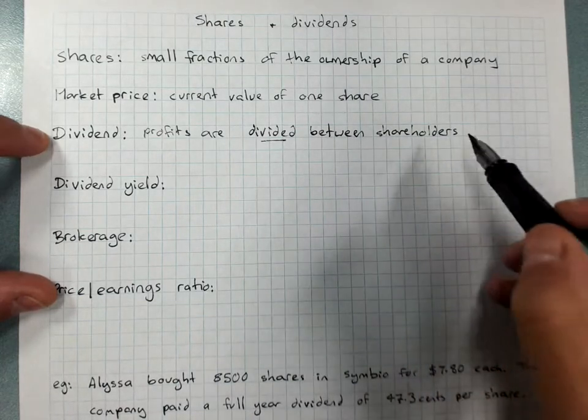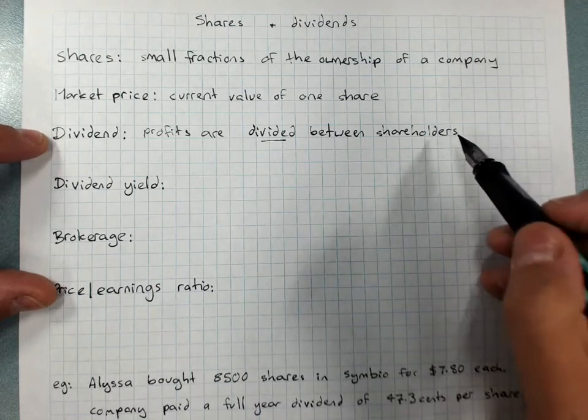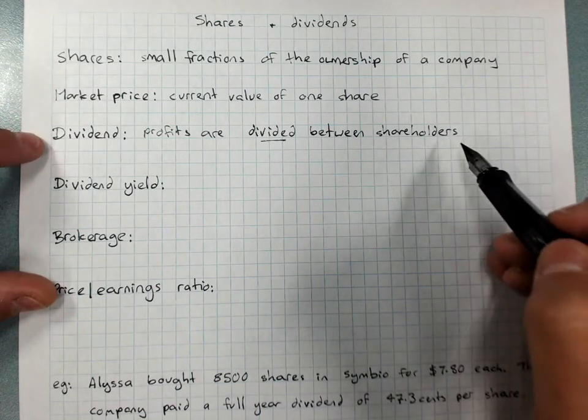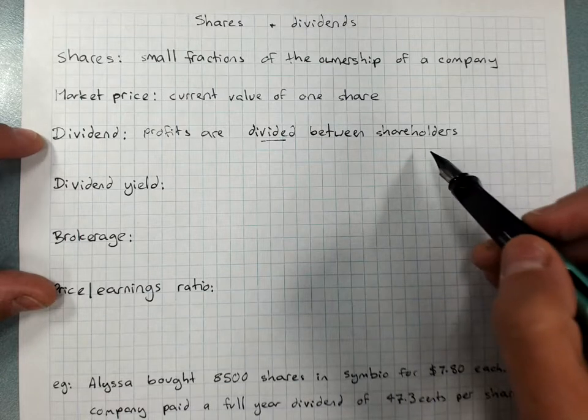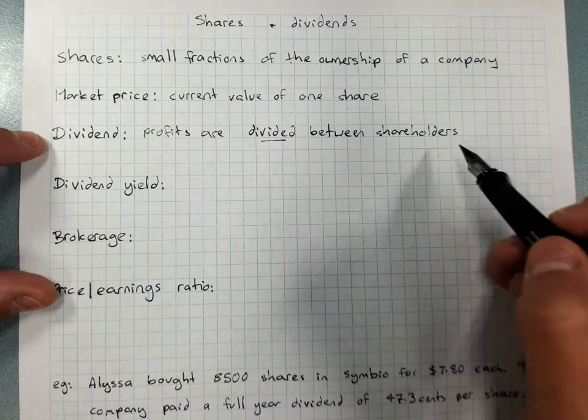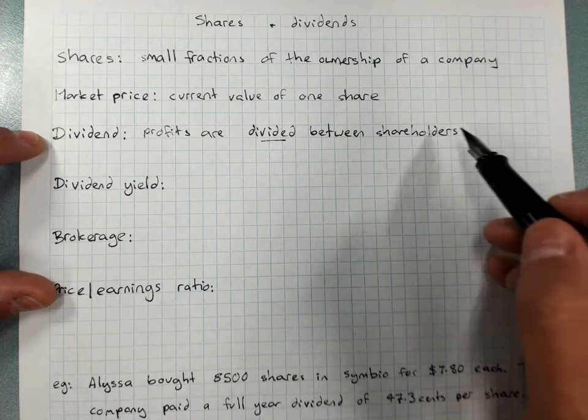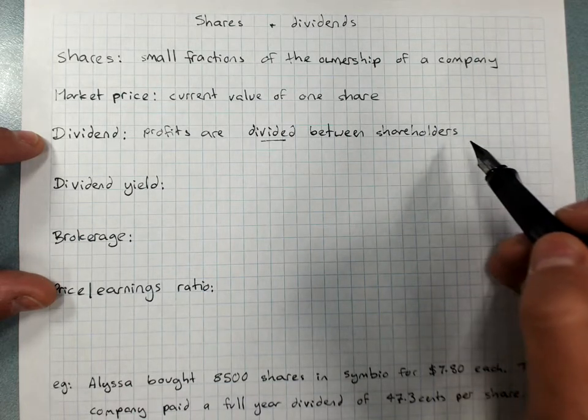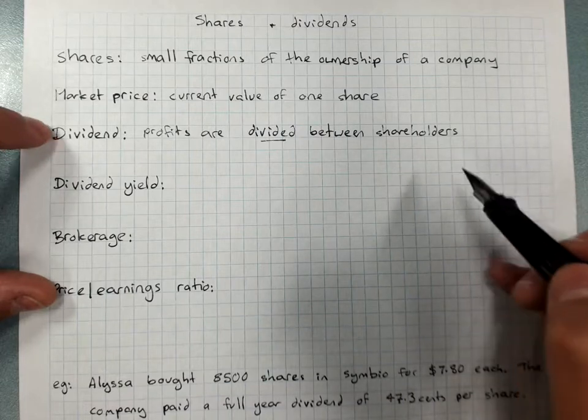How much you'll get for a dividend depends on how many shares there are and what profit is being divided up. So if there's a thousand dollars profit and five hundred shareholders, a thousand divided by five hundred, everybody would get two dollars per share as a dividend.